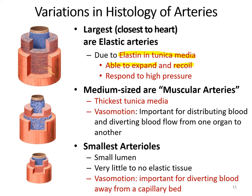Medium-sized arteries are sometimes called muscular arteries. Their tunica media is the thickest of all three types and is very important in vasoconstriction and vasodilation. Limiting blood flow through vasoconstriction helps to distribute blood to different parts of the body. The smallest arteries are arterioles, and you see a smaller lumen with very little to no elastic tissue. But because there's a tunica media, vasoconstriction can divert blood away from a very specific capillary bed.